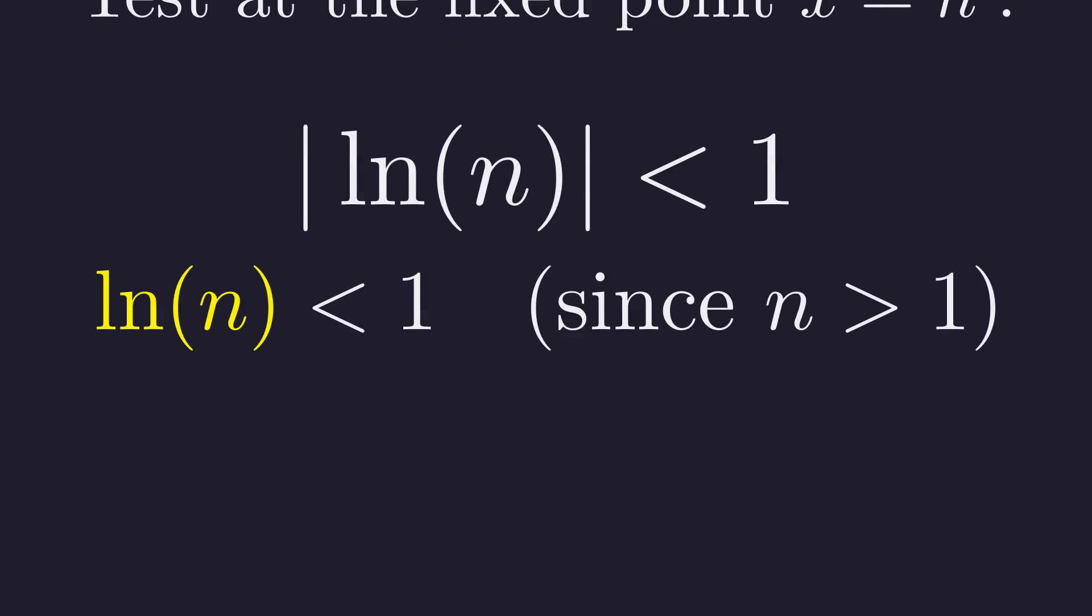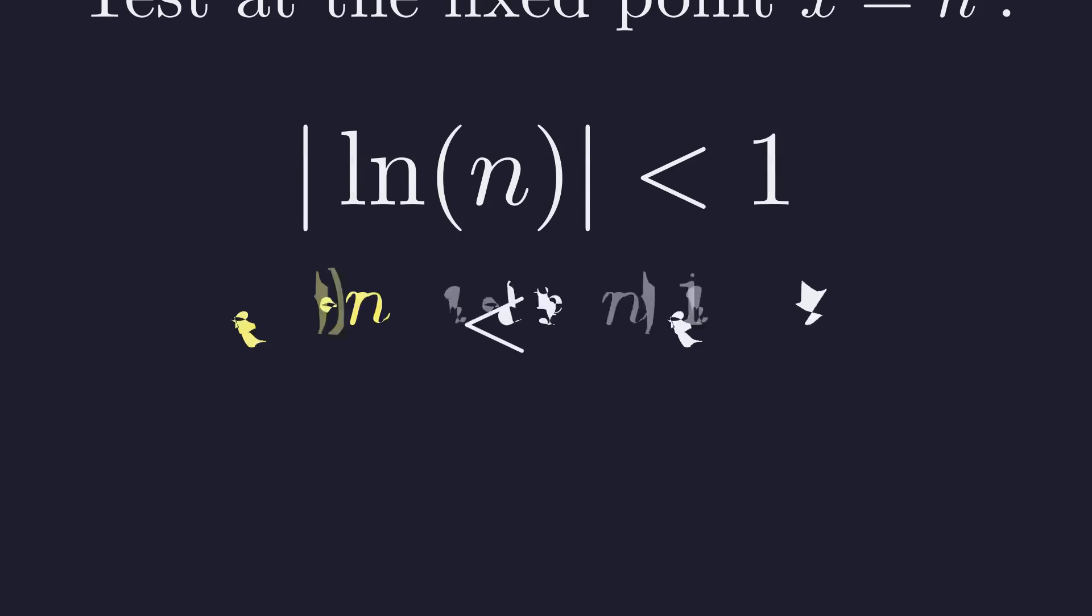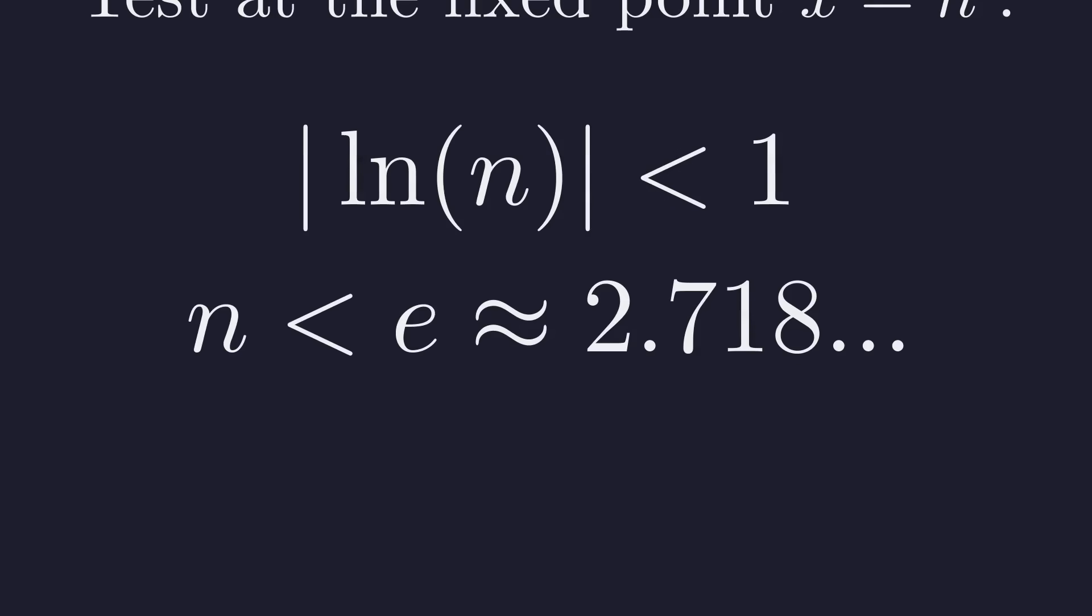To solve for n, we can exponentiate both sides. We raise e to the power of both sides. e to the natural log of n is just n. And e to the power of 1 is Euler's number, approximately 2.718.